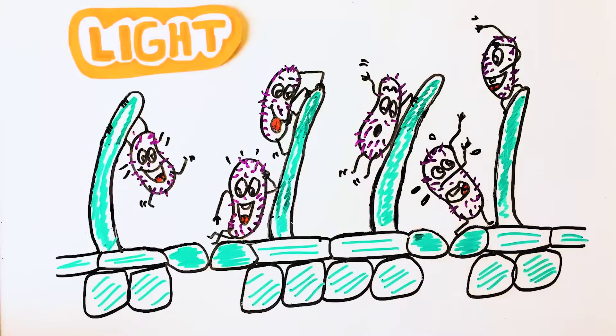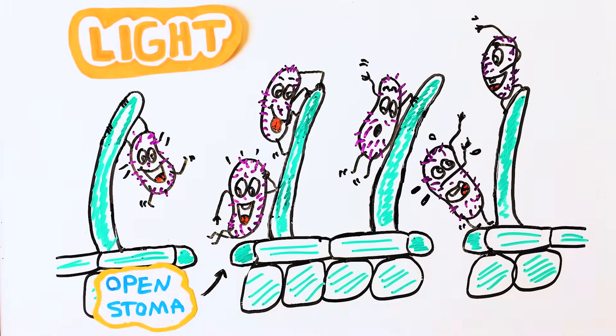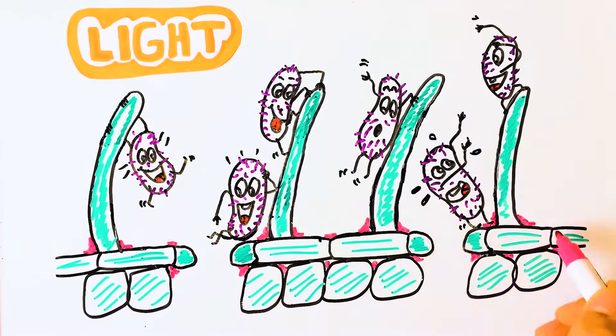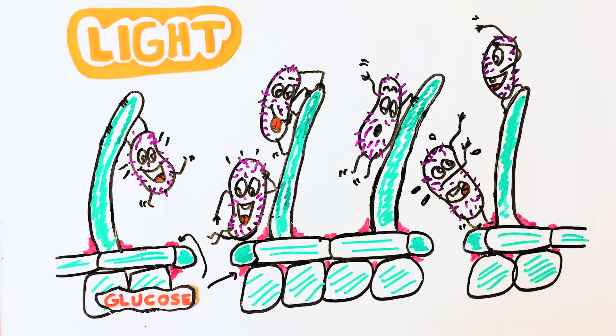In light, the stomatal pores get open. Light also triggers photosynthesis inside the leaf tissue, producing sugars like glucose inside the leaf. Some sugar is also available at the leaf surface, especially around the leaf microstructures, and these delicious nutrients attract the bacteria.